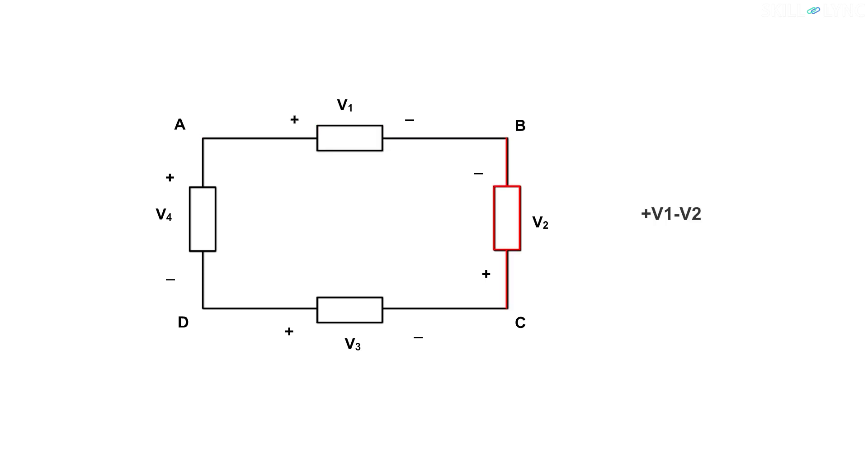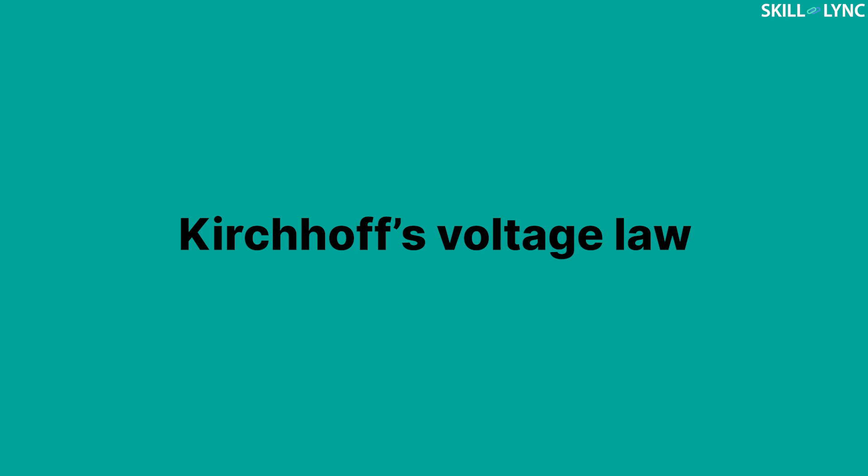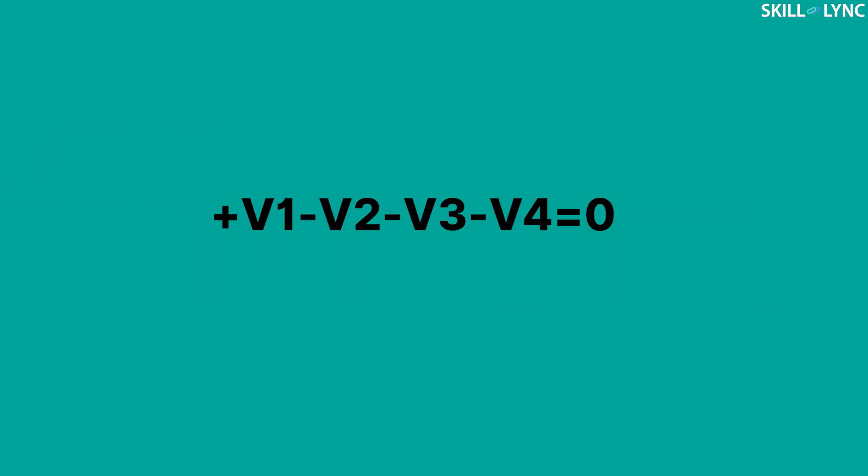Then, moving from B to C, the negative terminal is encountered first. Hence, we have negative V2. Similarly, while moving from C to D, we have negative V3. And moving from D to A, we have negative V4. Thus, applying Kirchhoff's voltage law, we have positive V1 minus V2 minus V3 minus V4 equals zero.